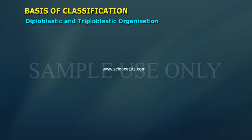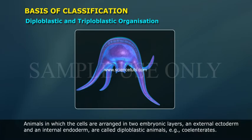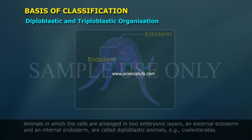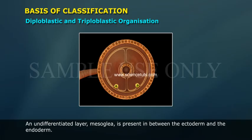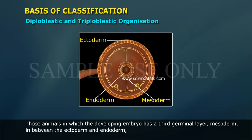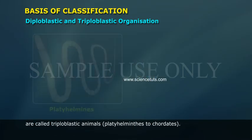In diploblastic and triploblastic organization: animals in which cells are arranged in two embryonic layers — an external ectoderm and an internal endoderm — are called diploblastic animals. Example: cnidarians. An undifferentiated layer, mesoglea, is present between the ectoderm and the endoderm. Animals in which the developing embryo has a third germinal layer, mesoderm, in between the ectoderm and endoderm, are called triploblastic animals. Example: platyhelminthes.